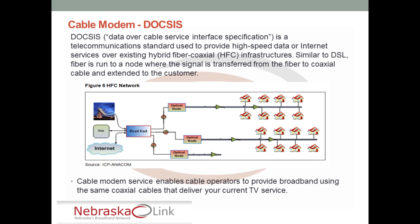Much like ADSL, there are different versions of DOCSIS, beginning at DOCSIS 1.x, which provides 38 megabits per second down and 9 megabits per second up, going all the way up to DOCSIS 3.1, which has a potential for 10 gigabits per second down and 1 gigabit per second up.